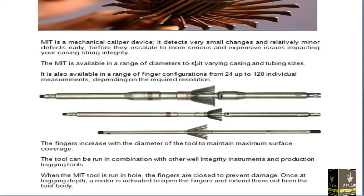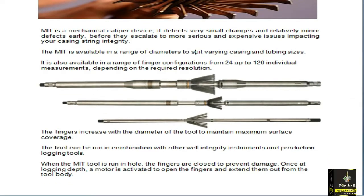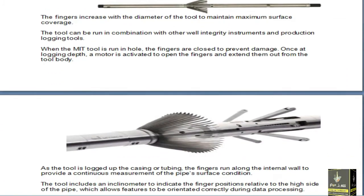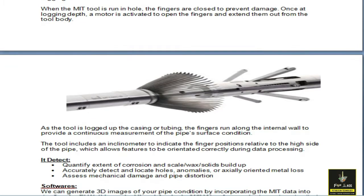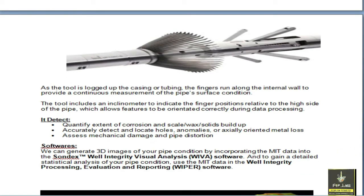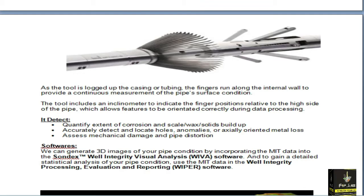I will show you practically how the motor is used to activate and open or close these fingers. We record data from down to up while pulling out of hole. When recording MIT data, we go down to the target depth then pull out of hole while recording. The tool has inclinometers to integrate the finger position, which ensures correct data is recorded during the process. It detects small damage like corrosion, scale, wax, solids, small holes, or any mechanical damage and pipe deformation.